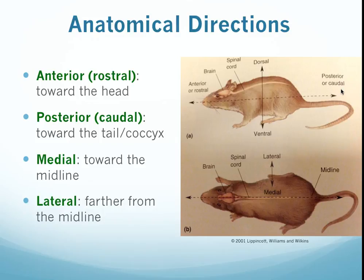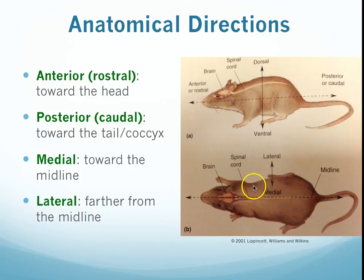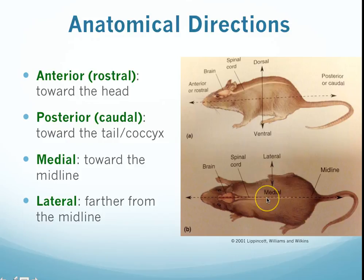We also have the terms medial and lateral. If we were to take a line and bisect this animal directly down the middle, medial means that we are close to the middle line of this bisection. So medial is towards the middle, whereas lateral is towards the edge. If we start from the point in the middle and move towards the edge, we are moving in a lateral direction — going from medial to lateral.